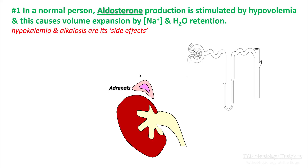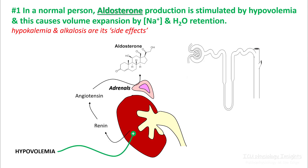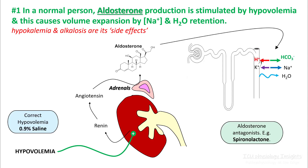The first tenet is that in a normal person, aldosterone production is stimulated by hypovolemia, and this causes volume expansion by sodium and water retention. Hypokalemia and alkalosis are its side effects, and this occurs through activation of the renin-angiotensin system. To treat these patients, correct the hypovolemia — the best fluid for these conditions is 0.9% normal saline. You can also give aldosterone antagonists like spironolactone to block the aldosterone receptors.